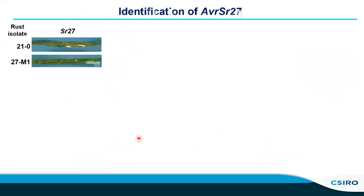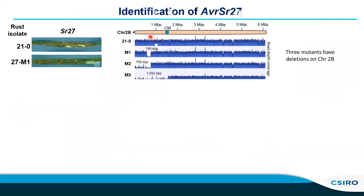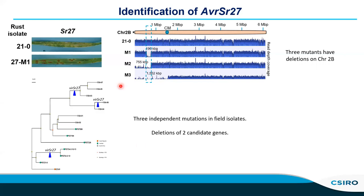More recently we've identified another avirulence gene, AVRSR27. We identified this by analysing mutants — we generated three laboratory mutants virulent to SR27, and when we sequenced those we found they all contained deletions on chromosome 2B in the same region, visible as loss of read coverage. The smallest deletion was 196 kilobases, containing 50 annotated genes. We then looked at a series of field isolates from South Africa and Australia in the race 21 group, which showed three independent mutations to virulence on SR27. All virulent isolates contained independent deletions that narrowed the candidate region to just two genes located next to each other.